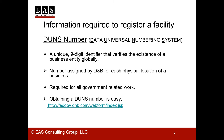What information do you need to register a facility? Another term you're going to hear on any submission application is DUNS number. This acronym stands for Data Universal Numbering System, and it's a database maintained by Dun & Bradstreet. A DUNS number is a unique, nine-digit identifier that verifies the existence of a business entity globally. DUNS numbers are assigned by Dun & Bradstreet for each physical location of a business, and they're required for all government-related work. Obtaining a DUNS number is an easy process and can be done over the Internet.